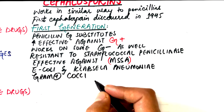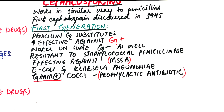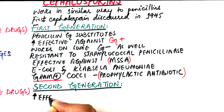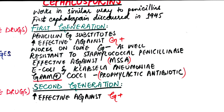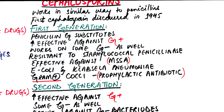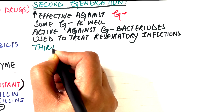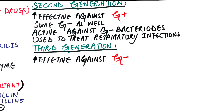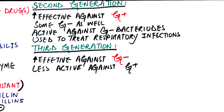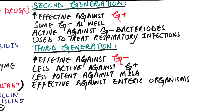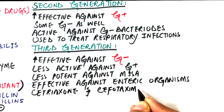First-generation cephalosporins are also active against gram-positive cocci including staphylococci and common streptococci, and some are used as prophylactic antibiotics for surgery. Second-generation cephalosporins, like the first generation, are mainly effective against gram-positive bacteria and only against some gram-negative bacteria. They are the only cephalosporins commercially available with appreciable activity against gram-negative anaerobic bacteria and are often used to treat respiratory infections such as bronchitis or pneumonia. Third-generation cephalosporins are effective against many gram-negative bacteria and bacteria that haven't responded to first or second generation cephalosporins. The third generation tends to be less active against gram-positive bacteria and is effective against enteric organisms. Ceftriaxone and cefotaxime have become agents of choice in the treatment of meningitis.